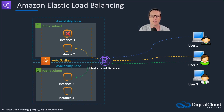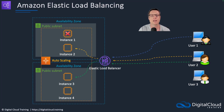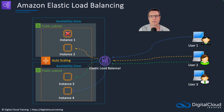If it gets that success code, it's going to assume that instance is healthy and working and operational. If it doesn't get a successful response, it's going to assume that instance is out of action. After a few tries, it's going to take it out of action and redistribute connections to a different EC2 instance.